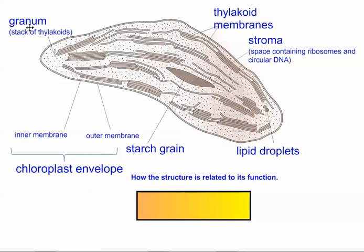An individual stack is called the granum. These are stacks of thylakoids. The surrounding area is called the thylakoid membrane, and a lot goes on there — in fact, all the light-dependent reactions, the production of ATP and NADPH, everything happens there.